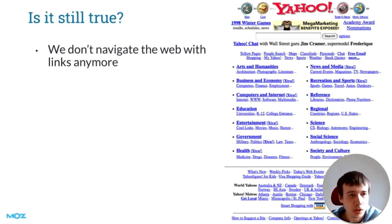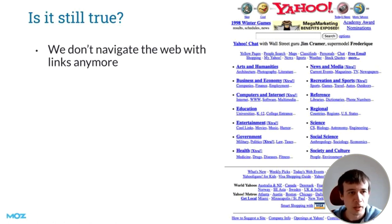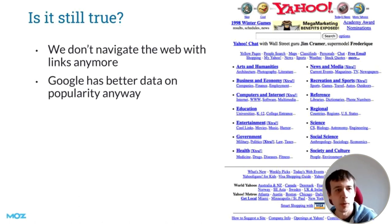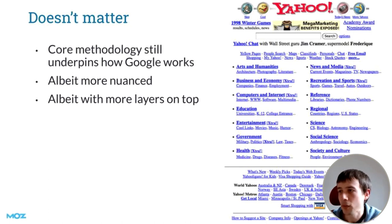However, is anything I said just now relevant 23 years later? We definitely do not primarily navigate the web with links anymore — we use search engines, and also news feeds which are dynamic and uncrawlable, and all sorts of other non-static HTML link-based patterns. Links are probably not even the majority of how we navigate the web, except maybe within websites. And Google has better data on popularity anyway — they run a mobile operating system, they run ISPs, they run a browser, they run YouTube. There are lots of ways for Google to figure out what's popular without building an arcane link graph.